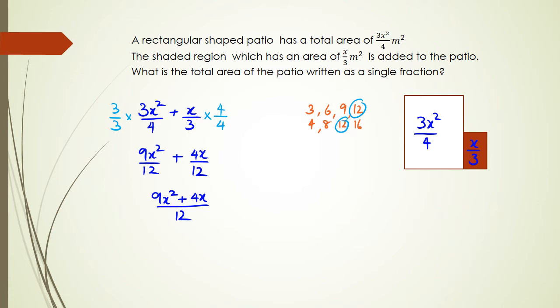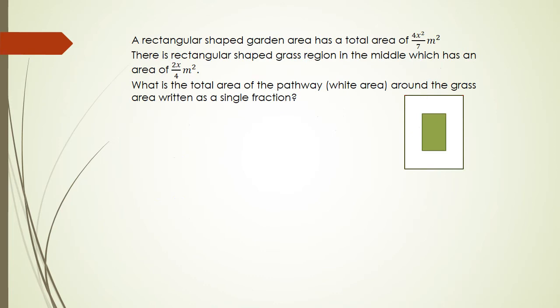Okay. Let's have a look at a different type of question, but this time we're looking at subtraction. So in this question, we have a rectangular shaped garden area. Well, sorry, I should have written garden has a total area of 4x squared over 7 meter squared. So that's the outside box. That's going to be 4x squared over 7. And then we have a second rectangular shaped grass region that's in the middle, which has an area of 2x over 4. And the question is, what is the total area of pathway around the grass written as a single fraction? So then what we have is 4x squared over 7 is the total area minus 2x over 4, which is the grass area.